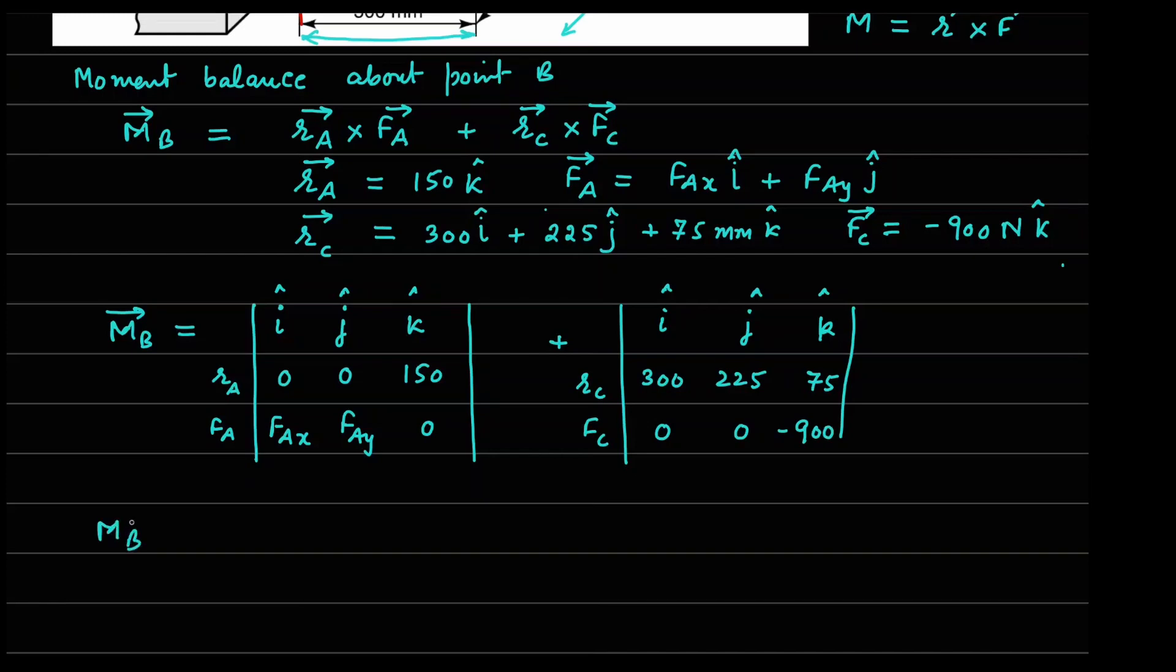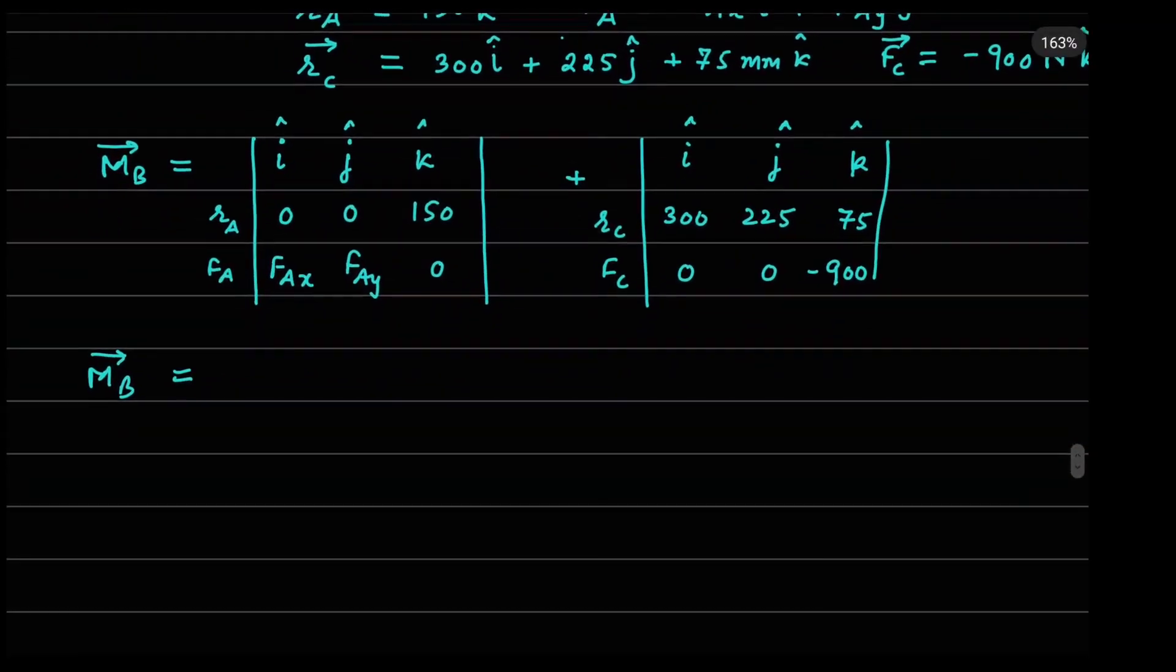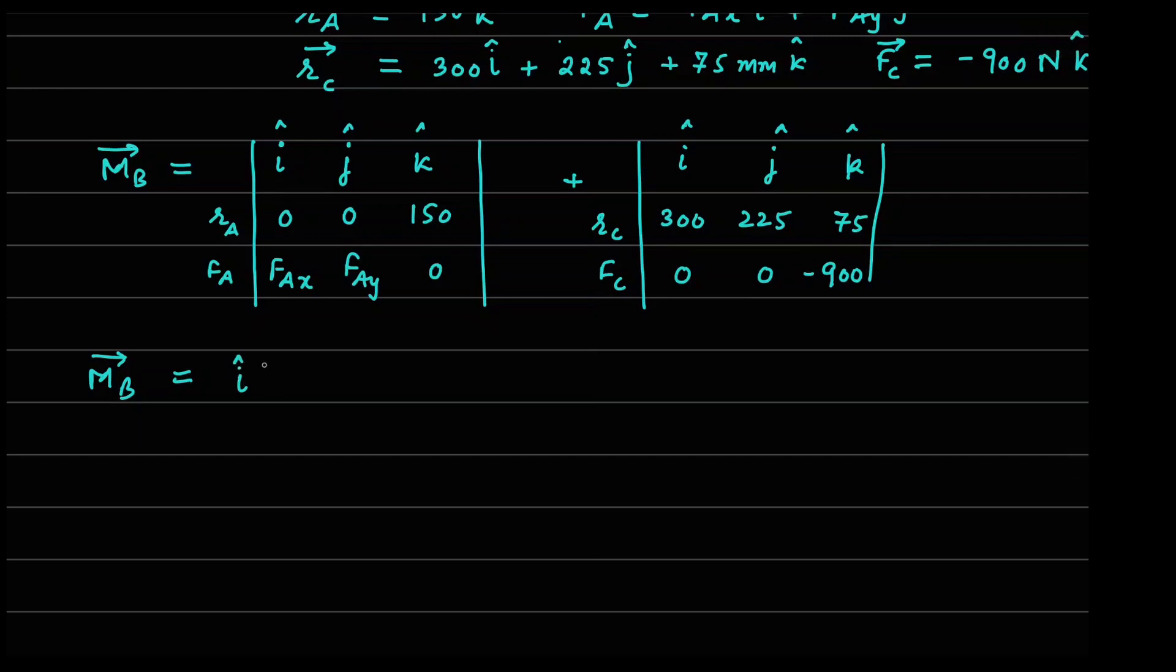So now if I do the determinant of these two matrices, I can find out the cross product. So with i cap, if I hide this column, I get 0 times 0 minus 150 FAY. And if I do it for this j cap, it's going to be minus j cap. And we are going to get 150, which is this and this times this. So minus 150 with a negative sign here, FAX, because 0 times 0 is going to give you 0, minus 150 FAX.